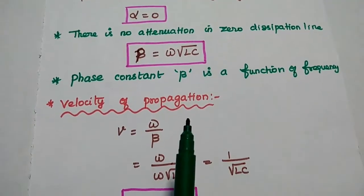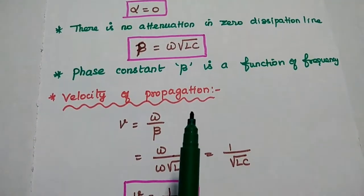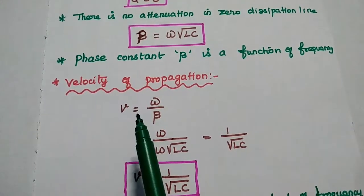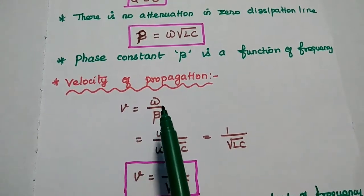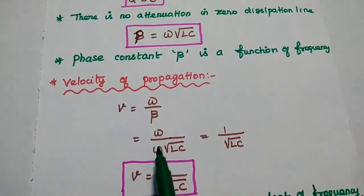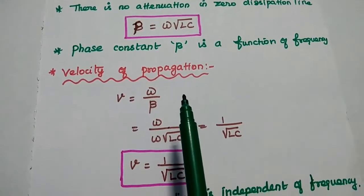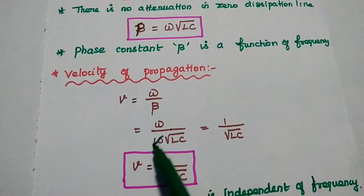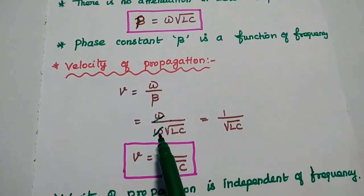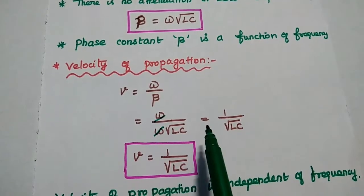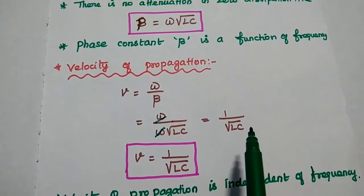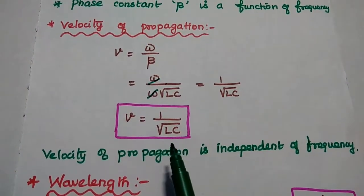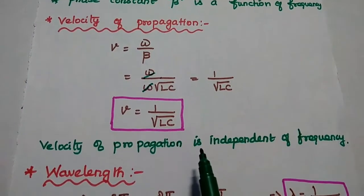From this, we can find out the velocity of propagation for zero dissipation line. Velocity of propagation V equals omega by beta. Substituting the beta value of omega into square root of LC, the omega terms cancel, and we get velocity V equal to 1 by square root of LC. This velocity of propagation is independent of frequency.